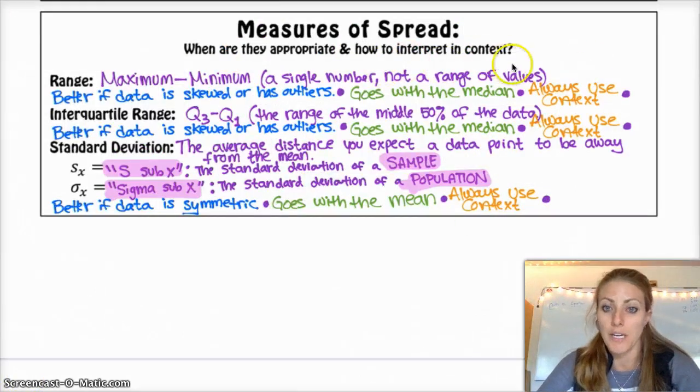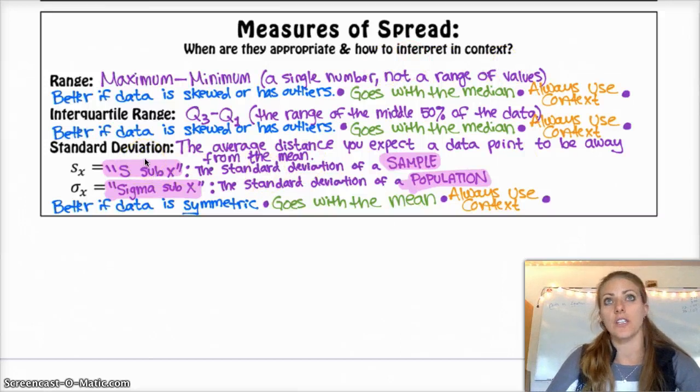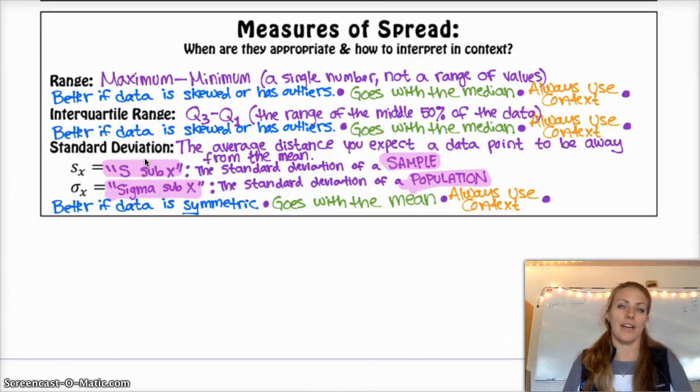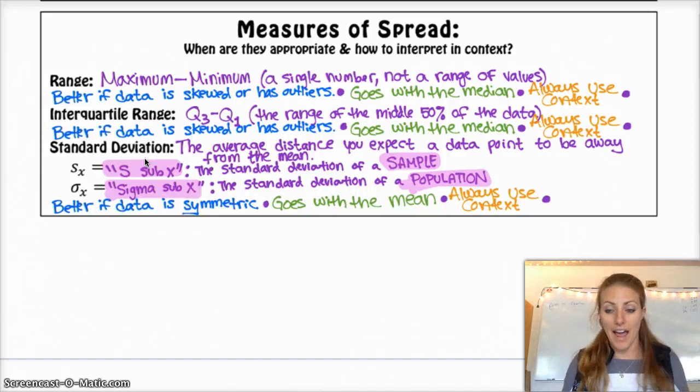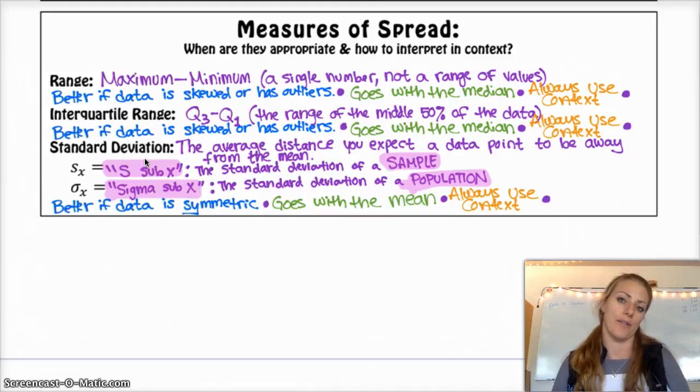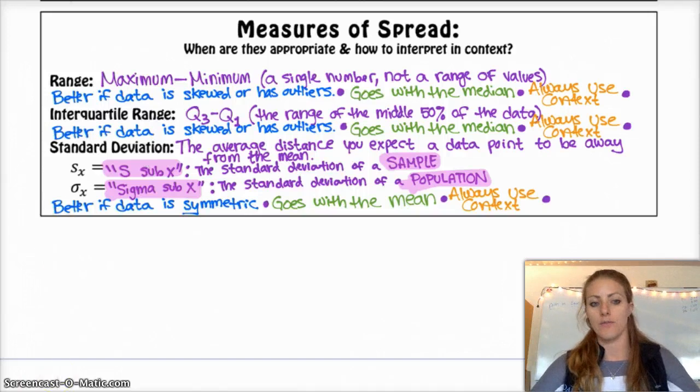Always use context when you're interpreting. For example, if I ask you what the standard deviation of 10% means on the test that I give back to you, what that means is that, on average, you'd expect a person's score to be 10 percentage points away from the mean. So, again, use context.